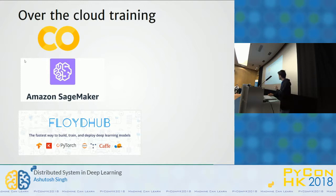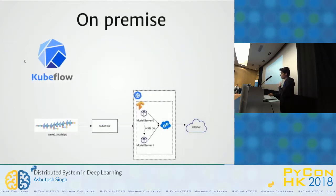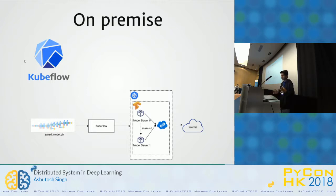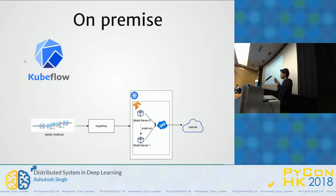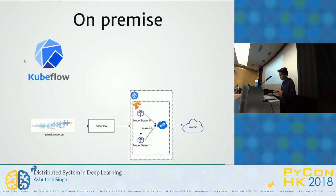If you're working natively at a company, Google has recently developed Kubeflow, which can be run on a saved model, where you can do all the computation within the Kubernetes architecture. This is how you can achieve distributed deep learning on-premise.